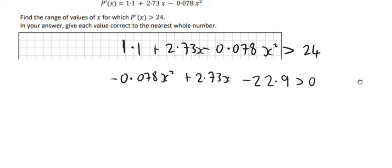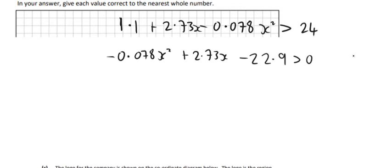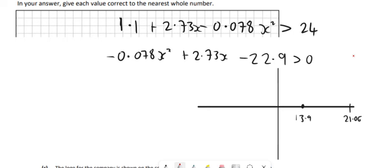If it was equals, if there was an equal sign there instead of the greater than sign, we could just use minus b formula and get two answers. So that's what we do, but we have to recognize then that they give us the roots of what that graph would look like. So our two answers would be about 13.9 and the other one is 21.06. That just gives us the quadratic there, something like that.